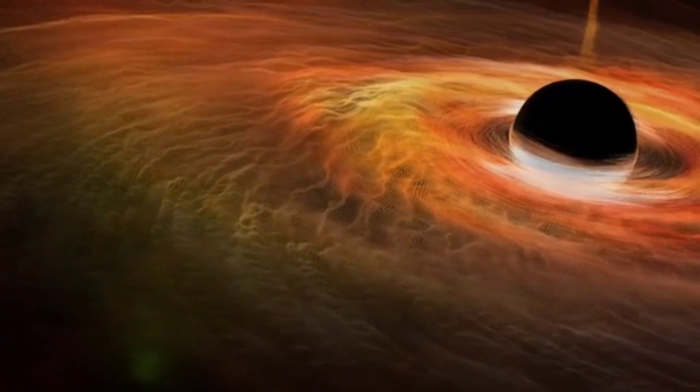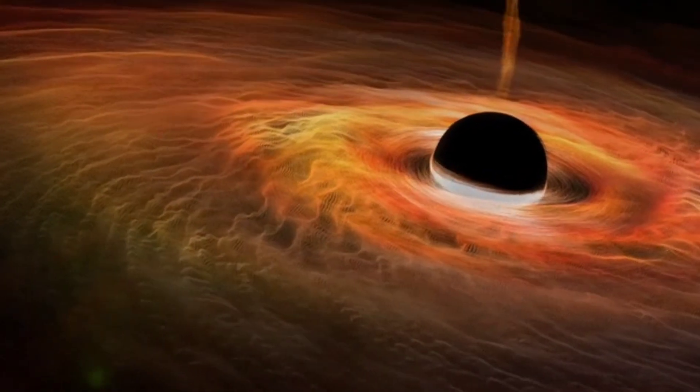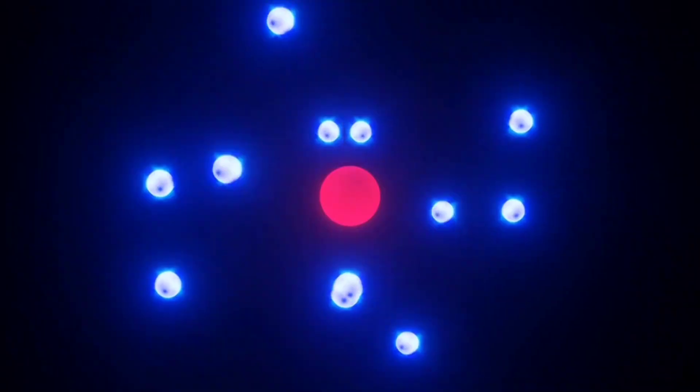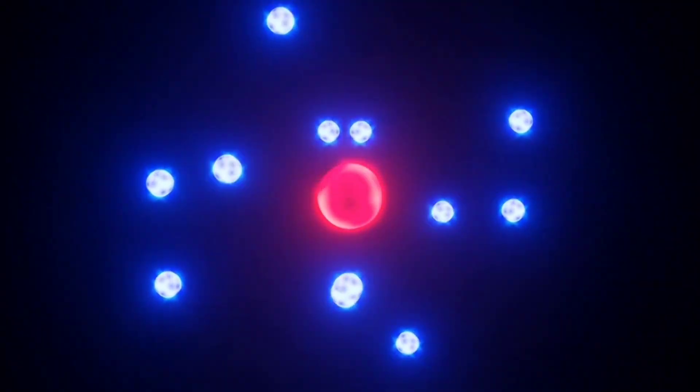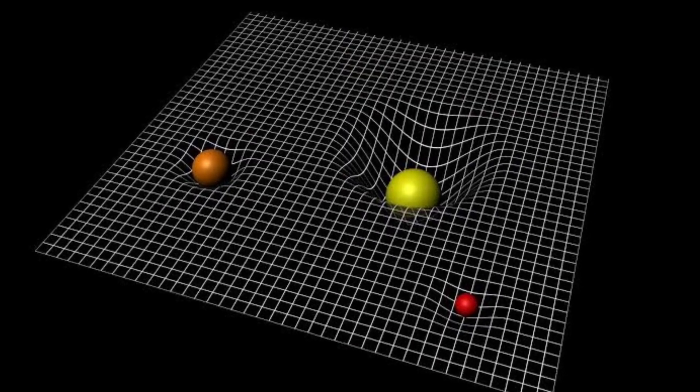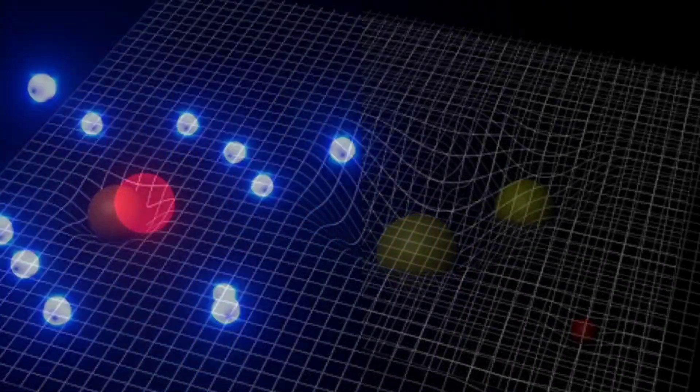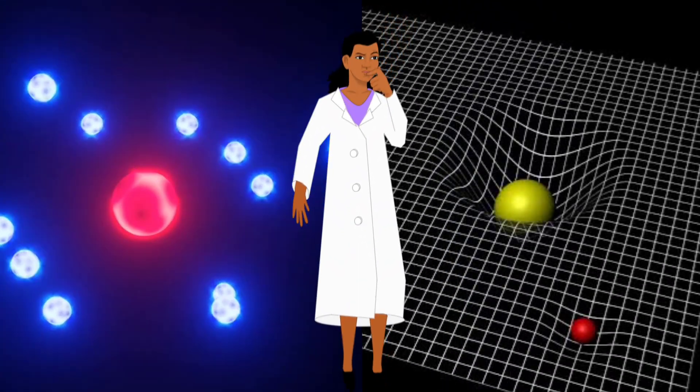Hawking's revolutionary insight arose from combining two well-established theories, quantum mechanics and general relativity. Quantum mechanics describes the behavior of subatomic particles on the smallest scales, while general relativity explains gravity and the curvature of spacetime. However, these theories seem incompatible at first glance.